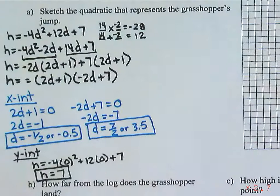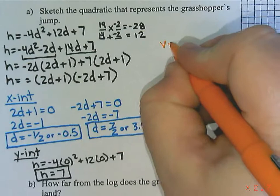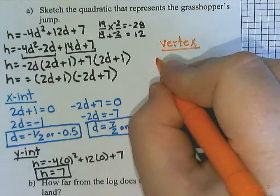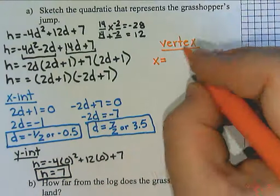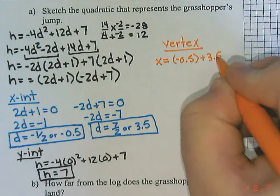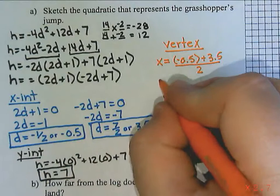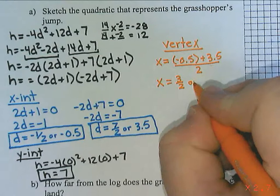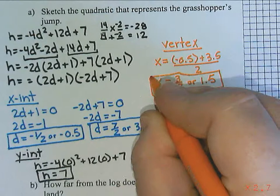And then the last part we need to do is our vertex. To find the x part of the vertex, we want to find the midpoint between our two x-intercepts. It's easier if I use the decimals here, so I'm going to add them together, and divide by 2. Now negative 0.5 plus 3.5 is 3. So this is going to be either the fraction 3 over 2, or that would be 1.5 if we did it as a decimal.